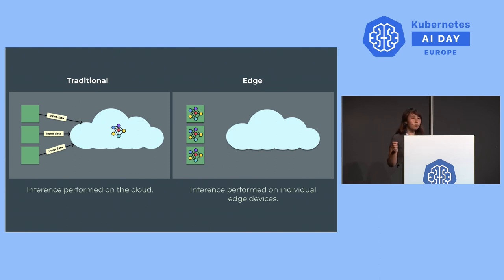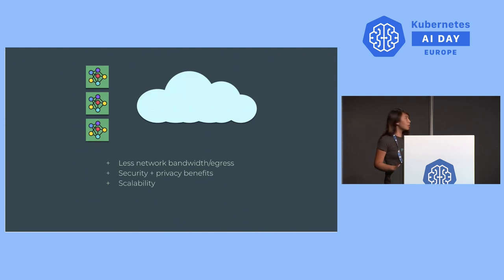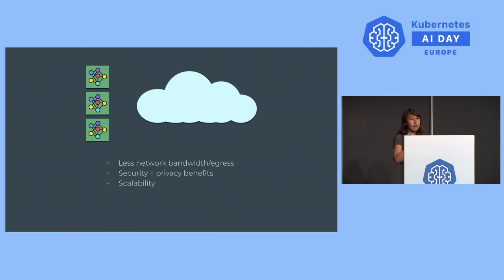Now you have a bunch of different environments. You can deploy to many different edge devices built on different hardware with different memory and compute resource requirements. The benefits: you are no longer egressing any data out to the cloud. All the information stays within the device itself, often just stored in memory. That helps a lot with latency — you're not waiting for that network request to come back and tell you what to do.